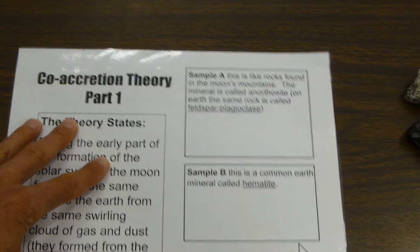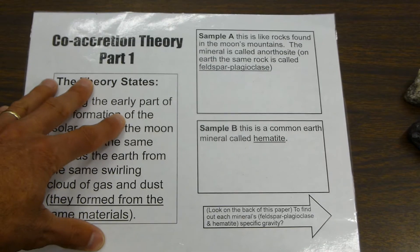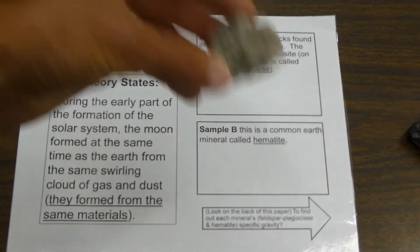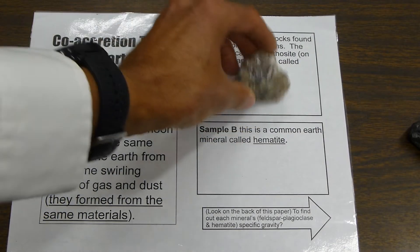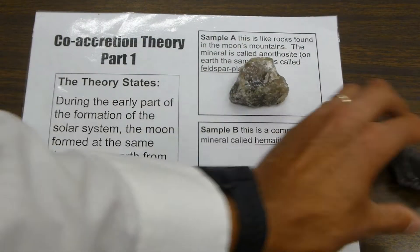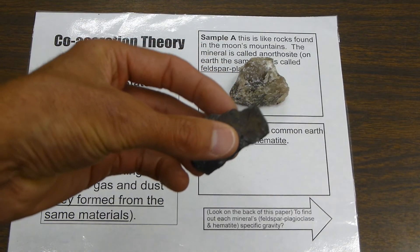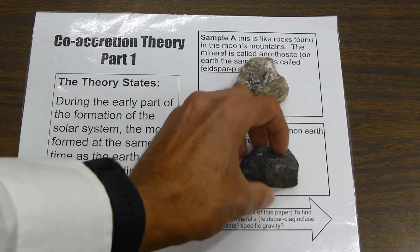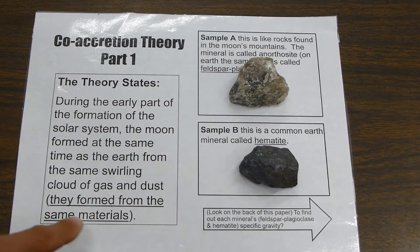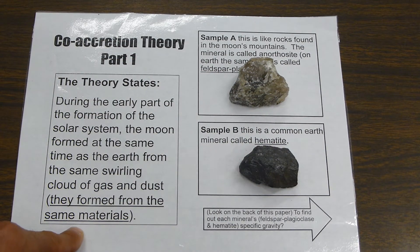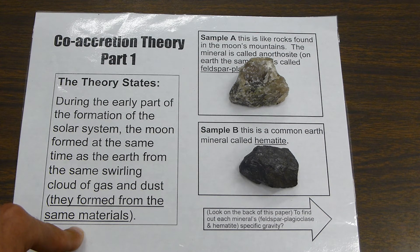That way you have the specific gravity of a rock from the moon and a rock from the earth, to see if it supports this idea that they formed from the same material. What should their specific gravities be if they formed from the same material?